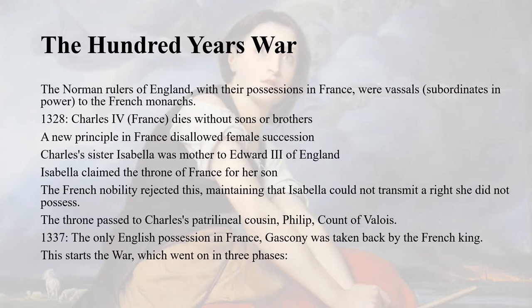Isabella claimed the throne of France for her son. But the French nobility rejected this, maintaining that Isabella could not transmit a right she did not herself possess. Thus the throne of France passed to Charles's patrilineal cousin, Philip, Count of Valois.